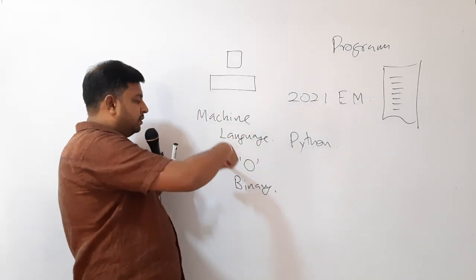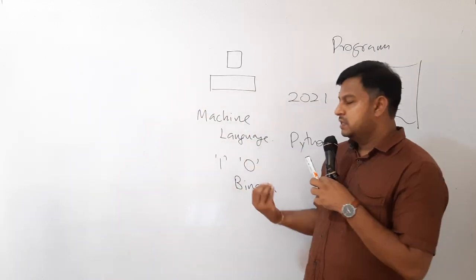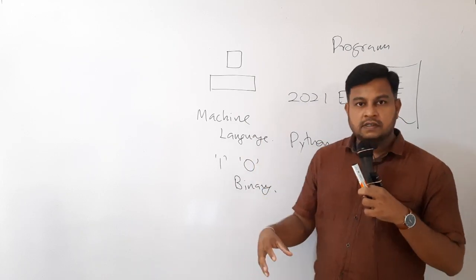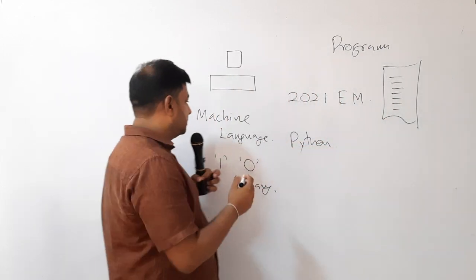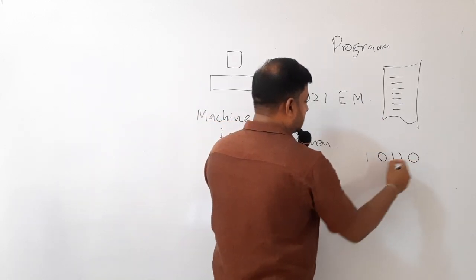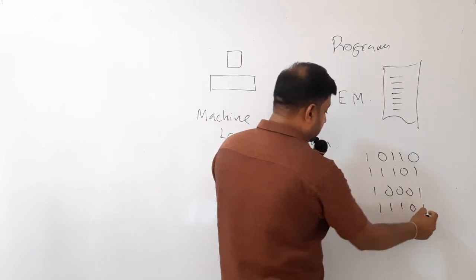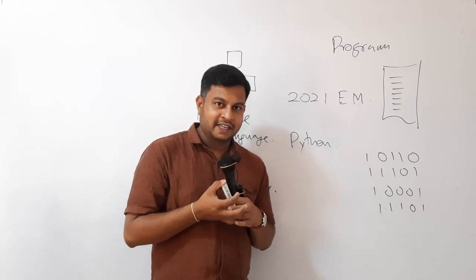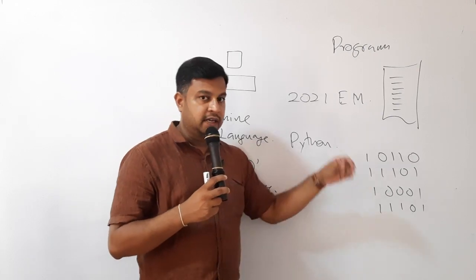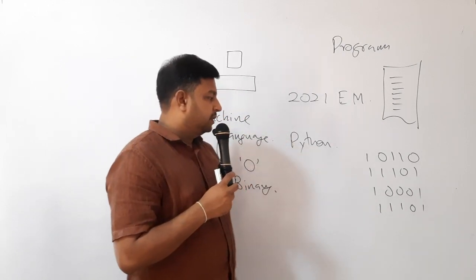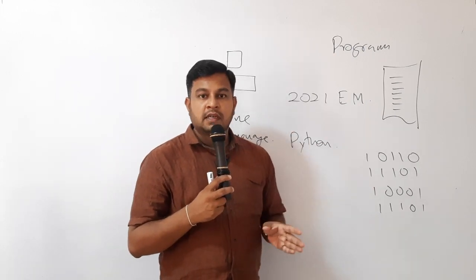Since the computer knows only the binary number system and the machine language, the CPU can understand only the machine language. So you have to give all instructions in binary; otherwise, it won't be executed. At the beginning, programmers wrote programs using binary — all instructions were given in binary. But is it easy to write programs in binary? No. It's a very tedious task — difficult and error prone. If there's an error, it's very difficult to debug and locate it. Writing programs using machine language is a tedious, error prone, and time-consuming task.